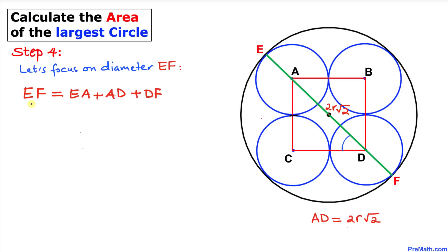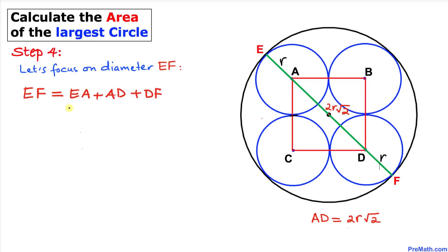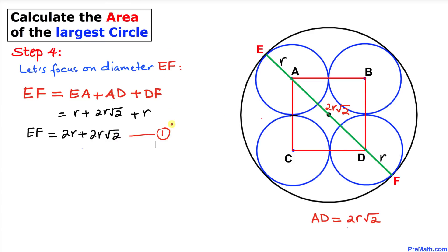Now let's focus on diameter EF. We can see that EF is simply the sum of these segments: EA, which is just the radius lowercase r; plus AD, which is 2r√2; plus DF, which is once again radius lowercase r. Filling in the blanks: EF = r + 2r√2 + r = 2r + 2r√2. This is equation number one.